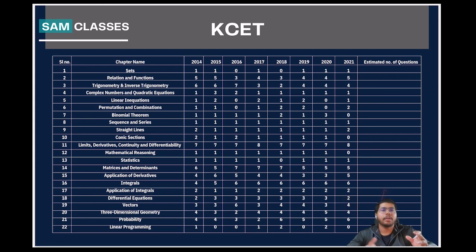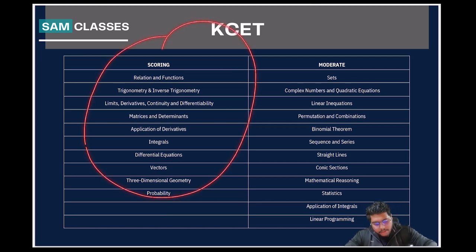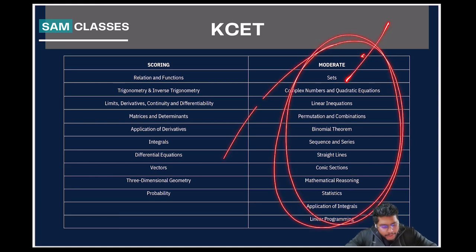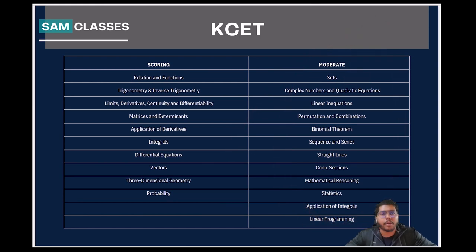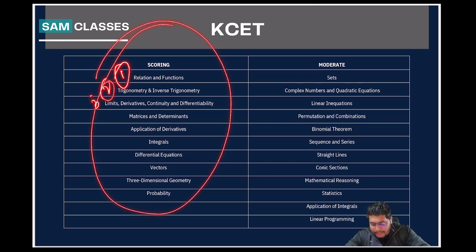This chapter-wise data is used to identify scoring versus non-scoring chapters. When you have limited time, focus on the most important topics first. If you start with the low-weightage easy chapters, you'll end up wasting a lot of time and score only 10 to 12 questions from those. So start with the scoring chapters — these are the top 10 prime topics you need to focus on.